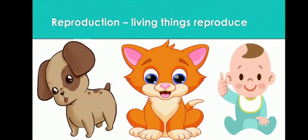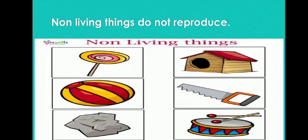The last difference is reproduction. Living things reproduce — they produce babies of their own kind. Dogs produce puppies, cats produce kittens, and human beings produce babies. Non-living things like ball, hut, and drum do not reproduce. So these were the points of difference between living and non-living things.